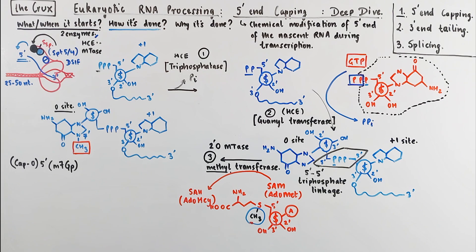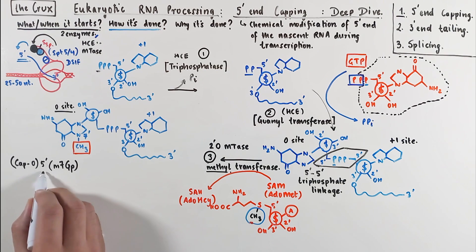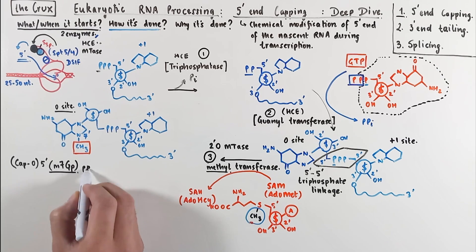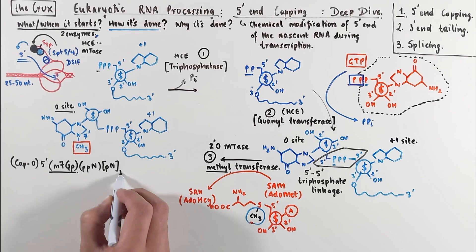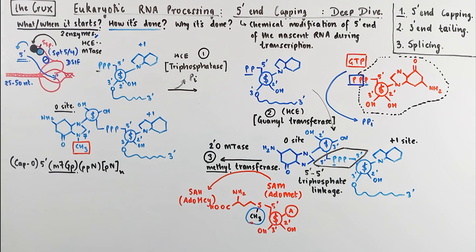To complete the notation of the RNA, we can now represent the plus 1 site as PPN. The two phosphates are written here because we have to complete the triphosphate linkage, and the second nucleotide has a normal phosphodiester linkage, so you get a PN. Now that's a typical 5' cap, which you may already know about.